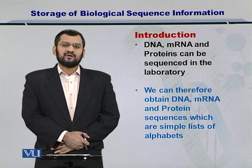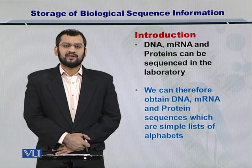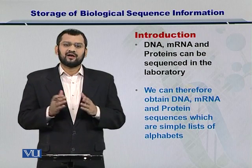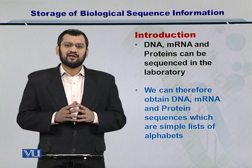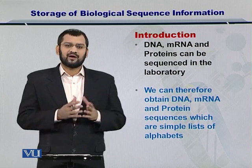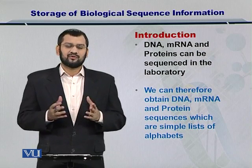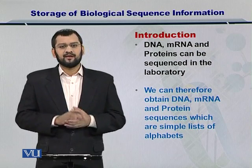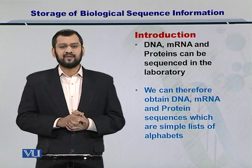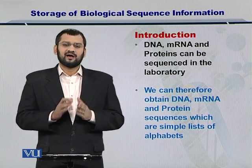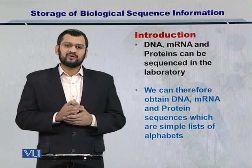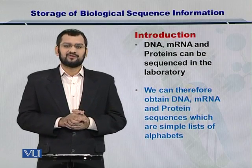Dear students, the DNAs, the RNAs, and the proteins can be sequenced in the laboratory. When I say RNA specifically, please note that there are multiple types of RNAs — for instance, mRNA, tRNA, ribosomal RNAs, and others. So I am just summarizing all of the RNAs when I say RNA here. Once you obtain the DNA, RNA, and protein sequences from experiments in the wet labs, you can store them in simple alphabetic strings.